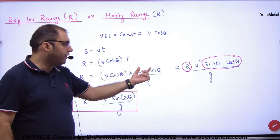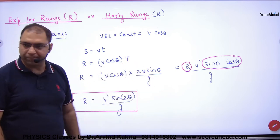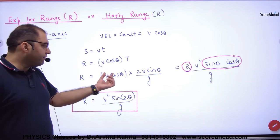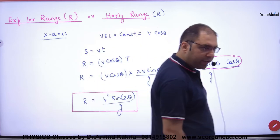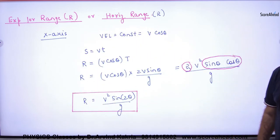And what is time of flight? 2v sin theta by g. So R equals vcos theta into 2v sin theta by g. So v into v is v squared. In maths there is a formula in trigonometry.